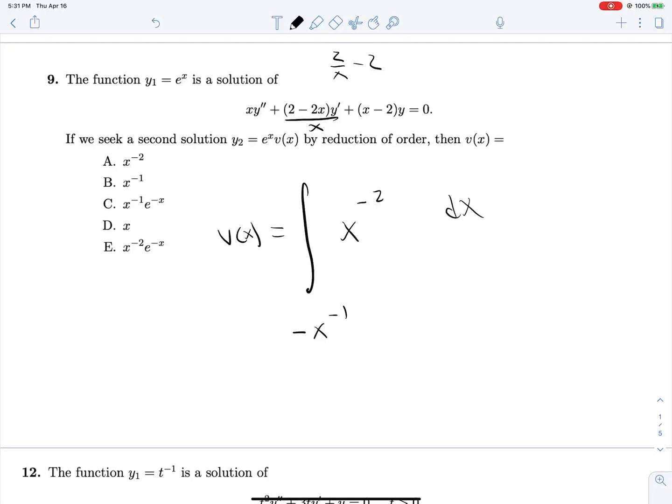The integral of this will be negative x to the negative first power. And so since in the end, this is multiplied by some constant that will have y equals c1 y1 plus c2 y2, we can get rid of this negative sign. It doesn't matter what constant is multiplied out here. So v of x is equal to x to the negative first power.